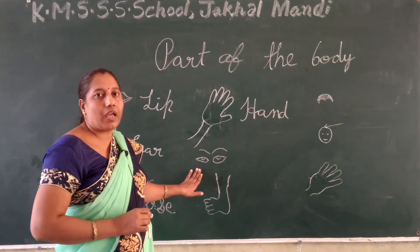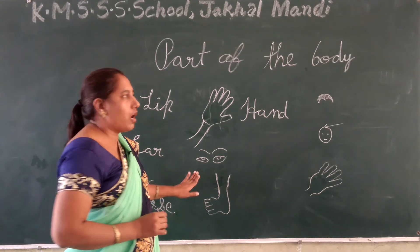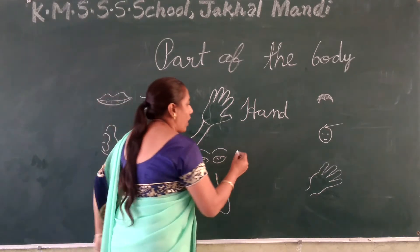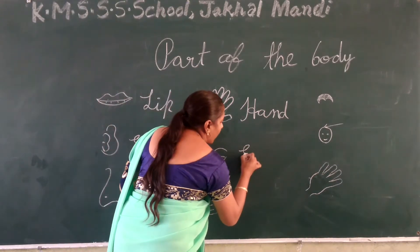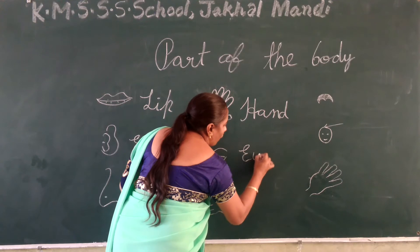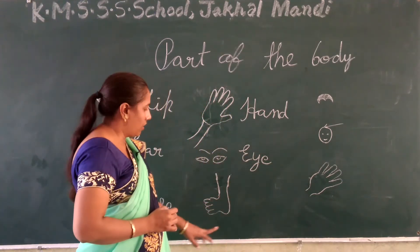Nose. What is it? Eyes. How do you spell it? E-Y-E. Eyes.